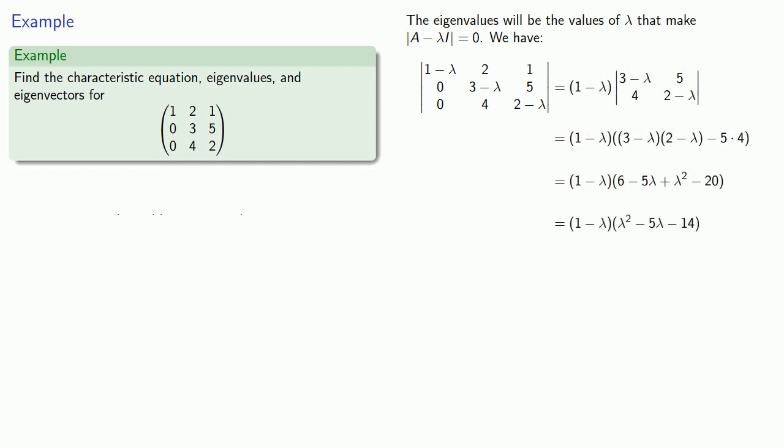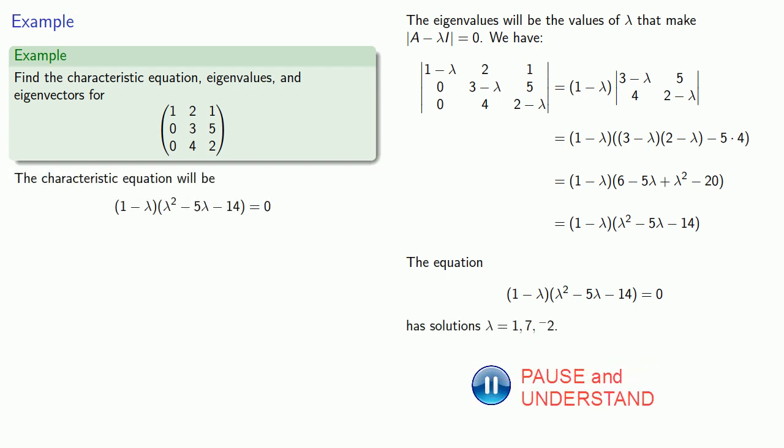The determinant equal to zero is the characteristic equation. This equation has solutions lambda equals 1, 7, and negative 2. These will be the eigenvalues.